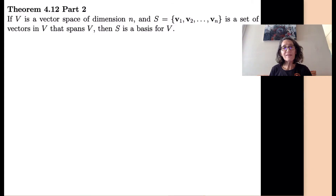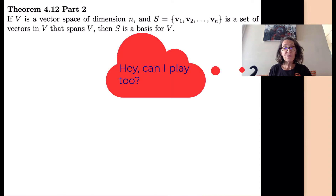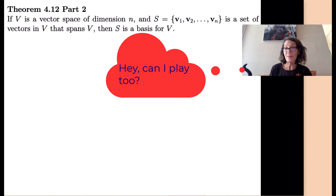Hi, welcome back. In this video, we're going to prove part two of theorem 4.12. Part two says if v is a vector space of dimension n and s is a set of n vectors from v that spans v, then s is a basis for v.